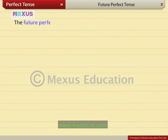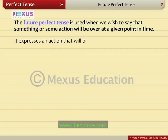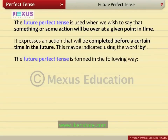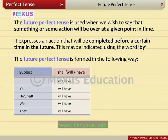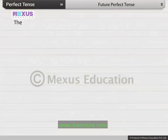The future perfect tense is used when we wish to say that something or some action will be over at a given point in time. It expresses an action that will be completed before a certain time in the future, often indicated using the word 'by.' The future perfect tense is formed as follows: shall or will plus have plus past participle. For example, you will have eaten your dinner by then.